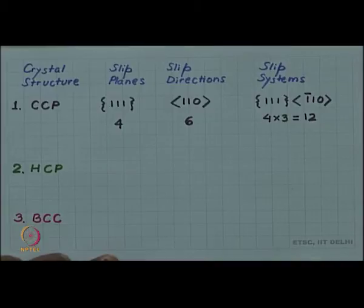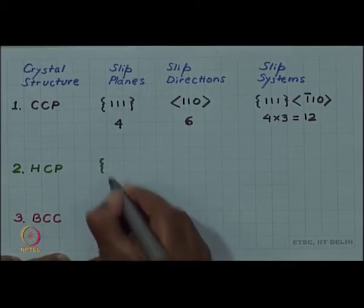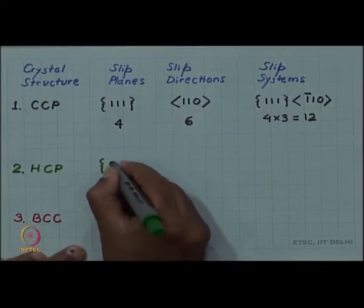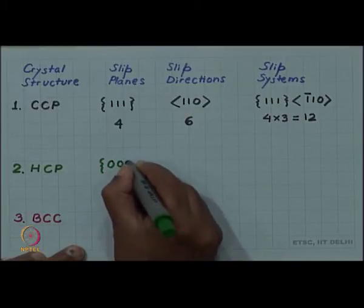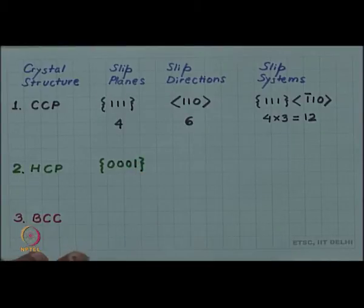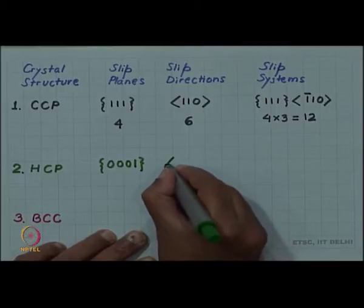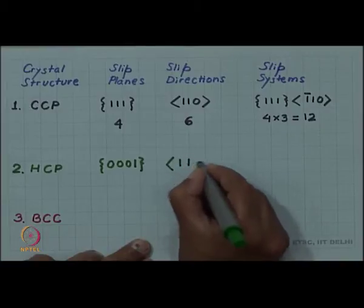In the hexagonal close-pack system, we have the {0001} plane as the slip plane and <11̄20> direction as the slip direction.